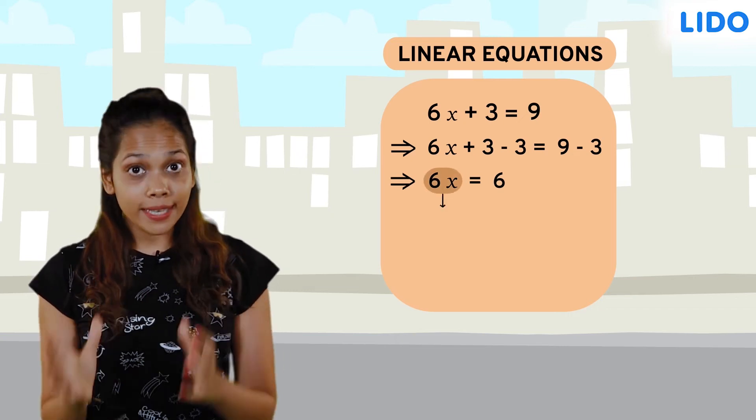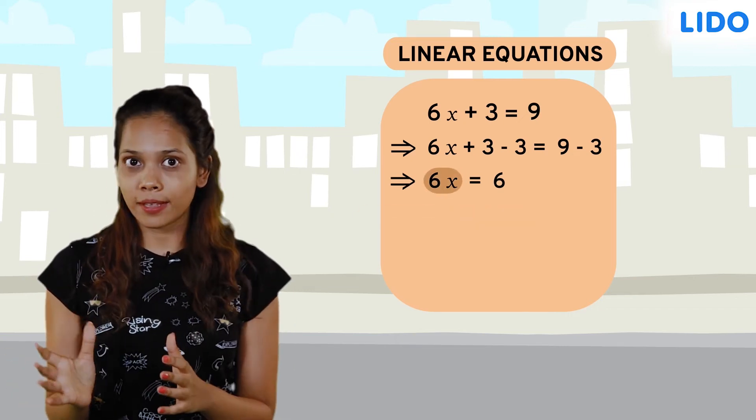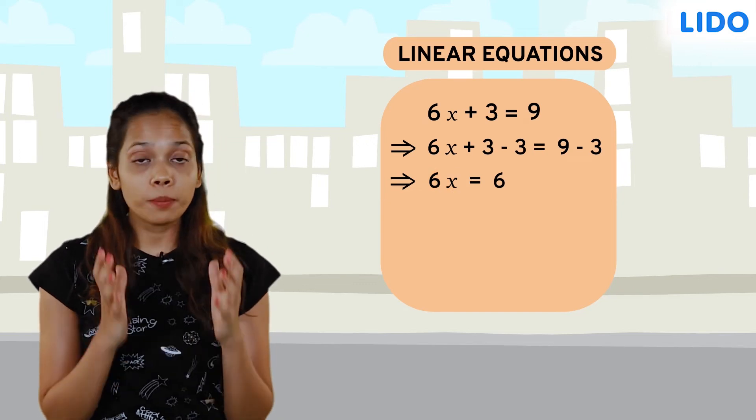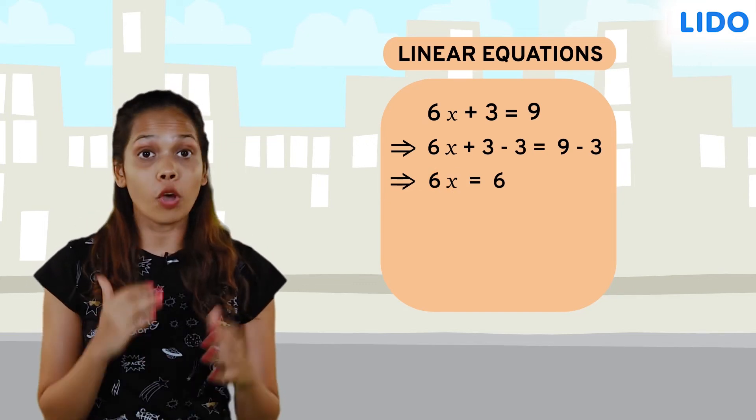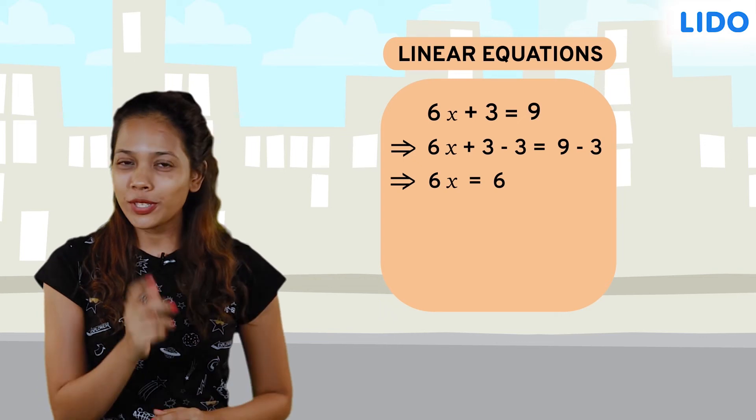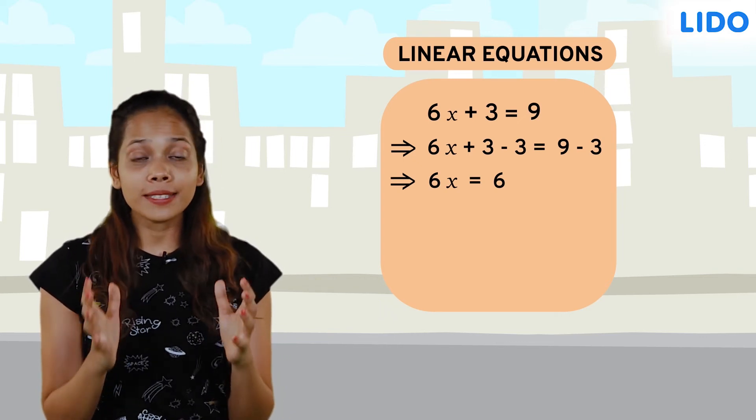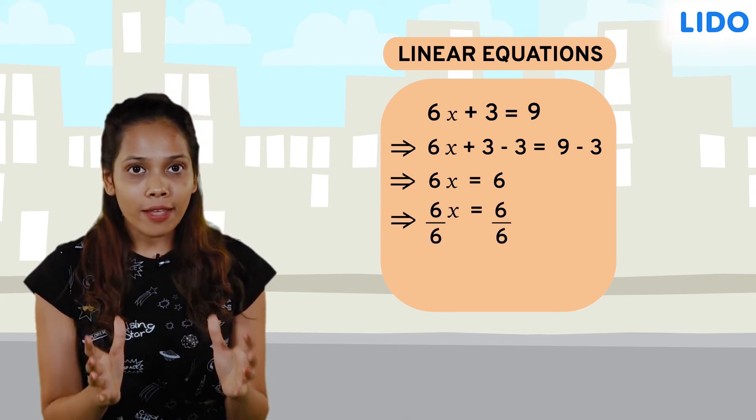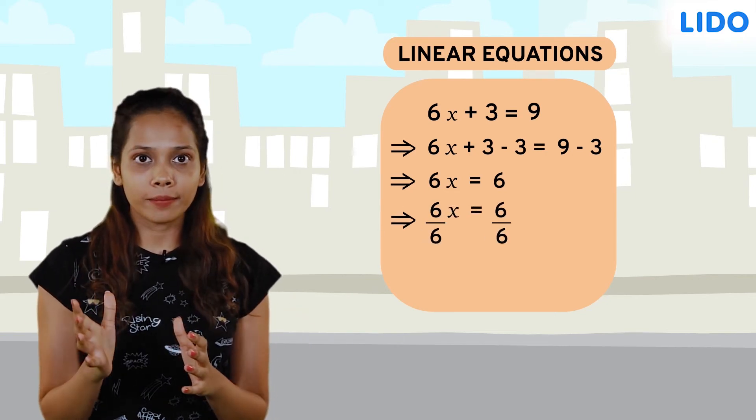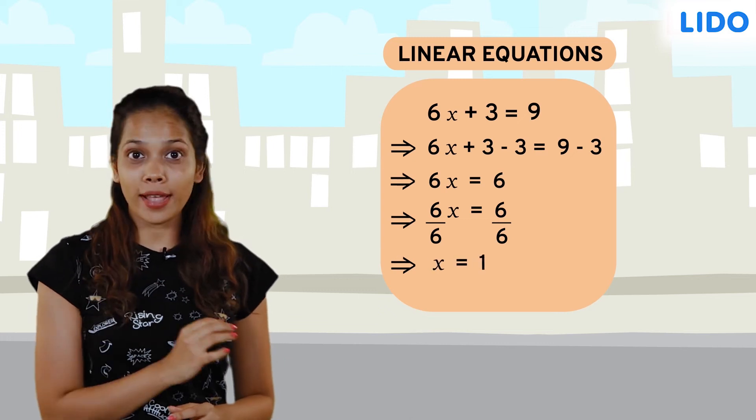Now 6x means 6 multiplied with x. To get rid of 6 we should perform the opposite operation of multiplication, which is division. We'll divide the left hand side with 6 and therefore also the right hand side. This gives us x = 1.